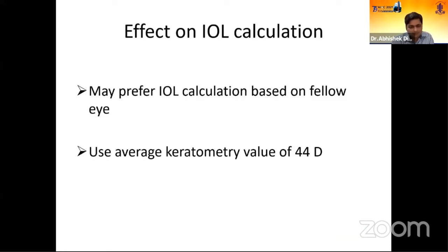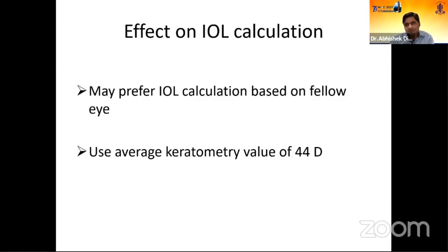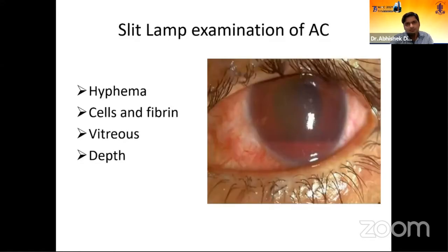Corneal curvature changes and corneal scarring all affect your IOL calculation. You can either use the fellow eye to plan IOL calculation, or use the average keratometry value of 44 diopters as a reference.